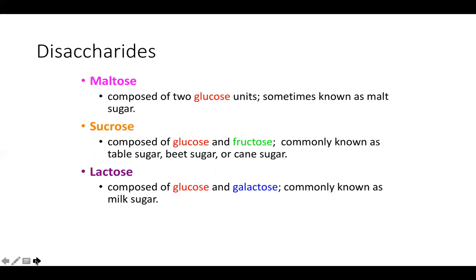Disaccharides include maltose, otherwise known as malt sugar, which has two glucose units. Sucrose is a disaccharide known as table sugar, beet sugar, or cane sugar, and is made of glucose and fructose — it's very sweet-tasting. Maltose is not as sweet. Lactose is composed of glucose and galactose and is known as milk sugar, which is also not that sweet. Of the disaccharides, sucrose is the sweetest.